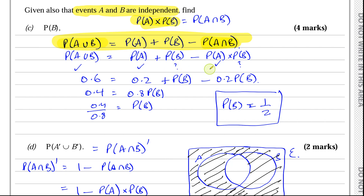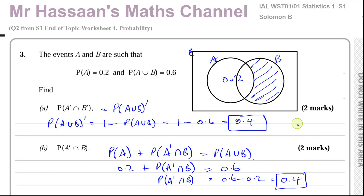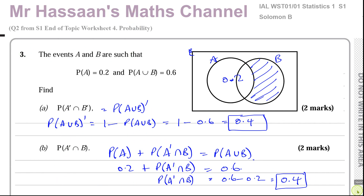So there we have it. Other questions from this paper — Solomon B from S1 — are in the playlist at the top right of the screen. Other questions from the end-of-topic worksheet number four on probability are in the playlist at the bottom right. Other probability questions from my S1 collection are in this playlist. You can subscribe by clicking on the link. Thank you for watching and see you soon.